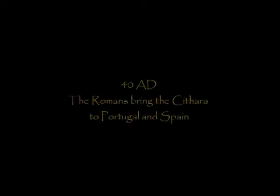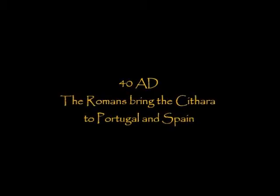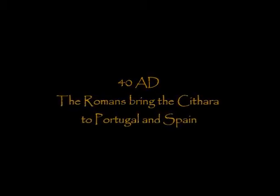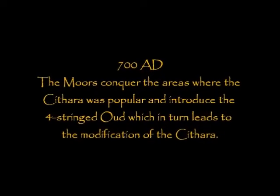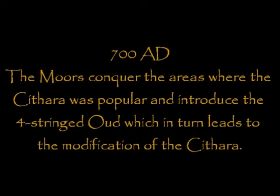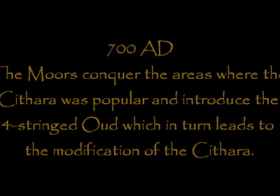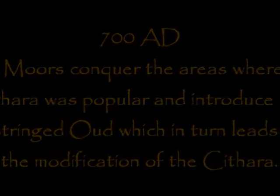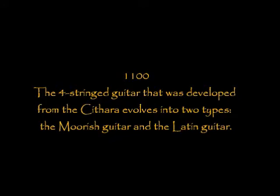In 40 AD, the Romans brought the Kithara to Portugal and Spain. In 700 AD, the Moors conquered the areas where the Kithara was popular, and they introduced the four-stringed oud, which in turn led to the modification of the Kithara. By 1100, the four-stringed guitar had developed from the Kithara into two types: the Moorish guitar and the Latin guitar.